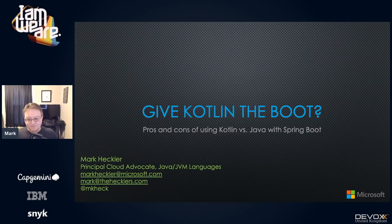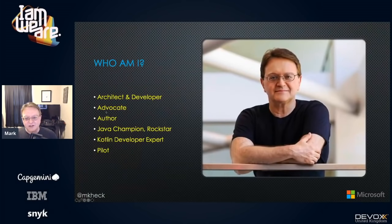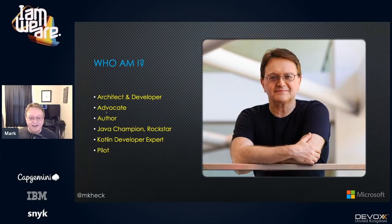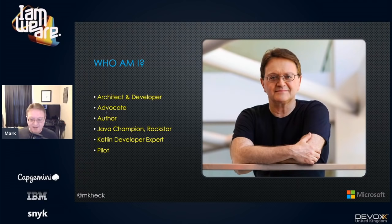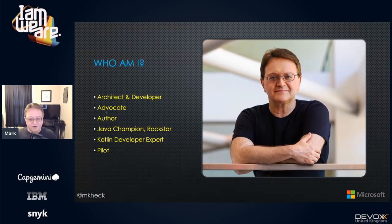A bit about me: I'm an architect and developer with a heavy background in the Java and JVM ecosystem. I'm an advocate and an author. I'm a Java Champion, Java One Rock Star, Groundbreaker Ambassador, and Kotlin developer expert. I'm also a licensed pilot — I fly in my copious spare time. Flying at a lower altitude and seeing the world from a few thousand feet up gives a different perspective and is a great mental challenge.